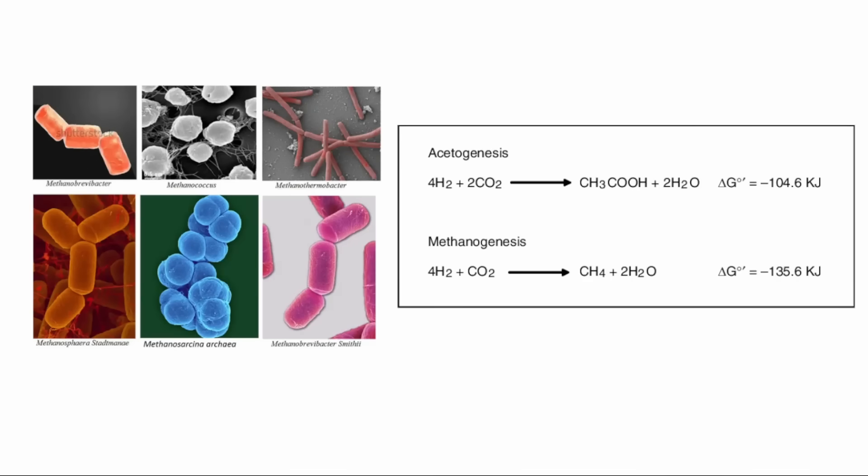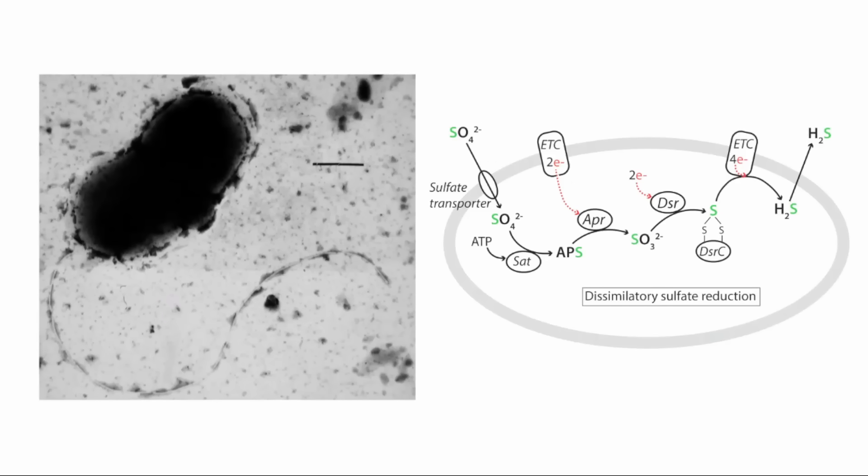A process called methanogenesis is used by some archaea to produce energy. They take hydrogen and carbon dioxide and turn it into methane and water. However, this requires hydrogen to be available in the environment. Another process called sulfur reduction is used by some bacteria. They take sulfate and break it into sulfite, which can then be used as an oxidizing agent. The final waste product is hydrogen sulfide. This metabolism was a lot more common in water without much oxygen, which is rarer to find today.